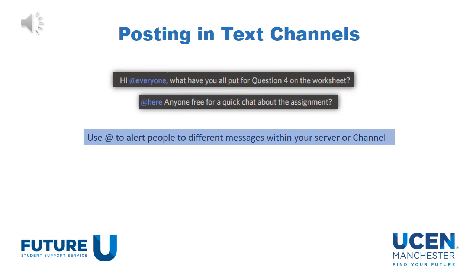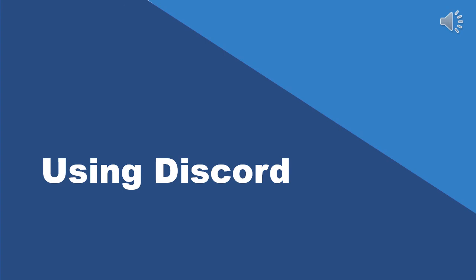When you are posting in a text channel, there are specific things you can do to grab someone's attention. Firstly, if you type the @ symbol and then type 'everyone', it will alert everybody in that channel to your specific message, sending them a notification. You can also type @here, which will notify anybody who is currently online — useful if you've got something urgent or just want to have a call with someone online. Another thing you can do is type @ and then somebody's name, which will alert that specific person to your message. This presentation has gone into some of the features of Discord, which might be really useful for you outside of uni and working with your course mates.